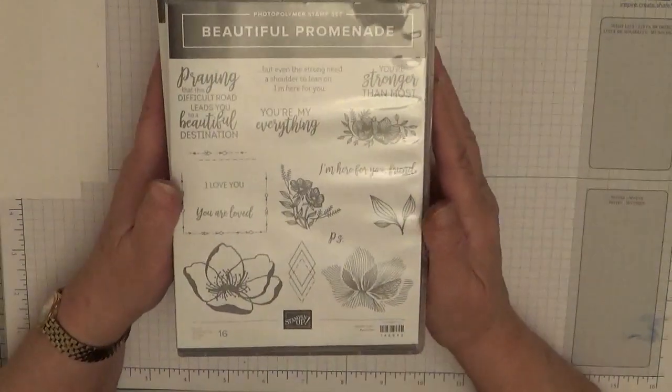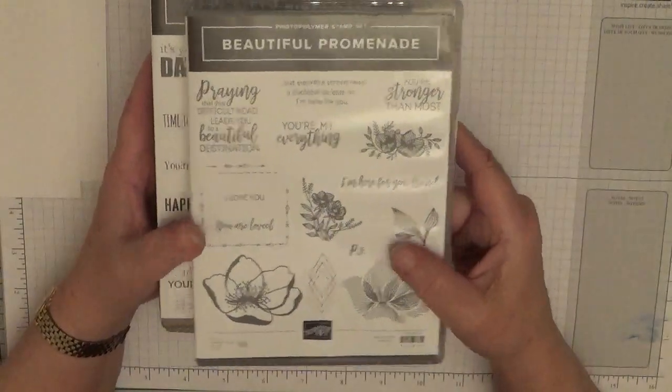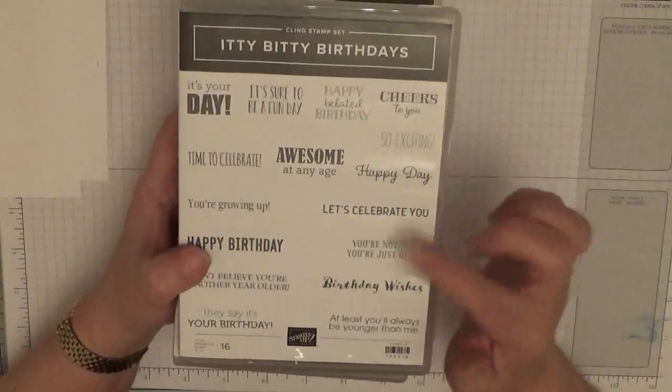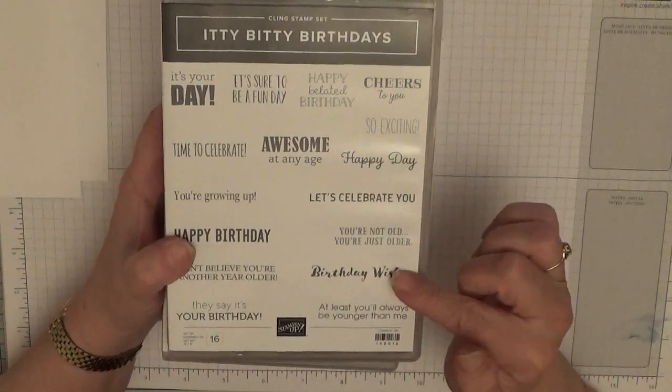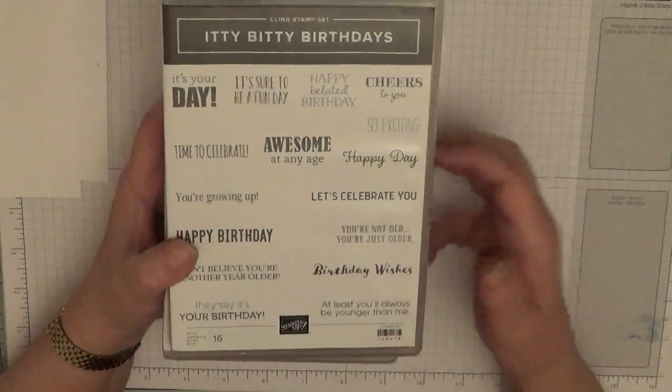To make this card we are using a few stamp sets. We're going to be using Beautiful Promenade and we're just going to use this image and this image. Itty Bitty Birthdays, which is a new stamp set in the occasional catalogue, and we're just going to use Birthday Wishes.